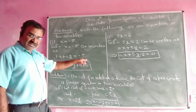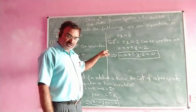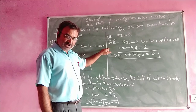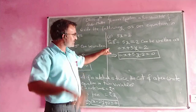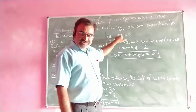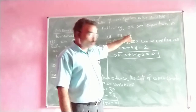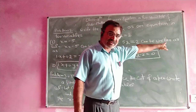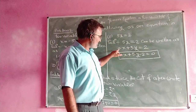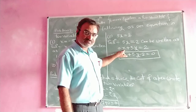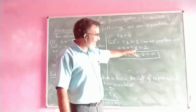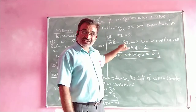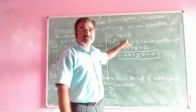Similarly, see the second problem. Write the equation also in the form of a linear equation in two variables. The given equation is 5y equal to 2. The solution: 5y = 2 can be written as 0 times x plus 5y equal to 2.